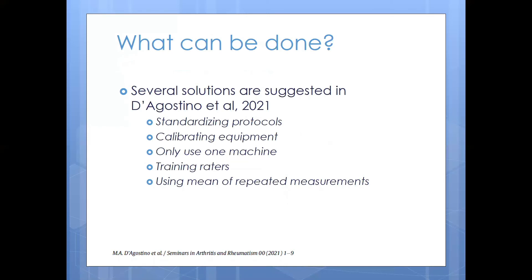Once we identify sources of variability, what can we do about them? Several solutions are suggested in D'Agostino et al. 2021: standardizing protocols, calibrating equipment, only using one machine for a clinical trial if you can't reduce error between machines, training raters, or using the mean of repeated measurements as your outcome score rather than just a single measurement.